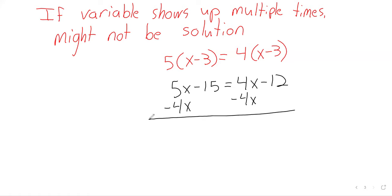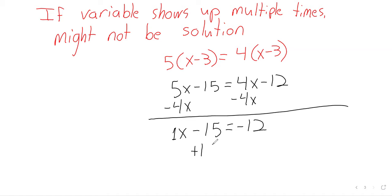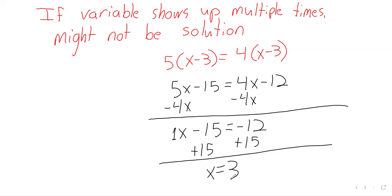Our options are to subtract 5x from both sides or subtract 4x from both sides, and we'll wind up in the same place. I observe that if we subtract 5x we get a negative x, whereas if we subtract 4x we get a positive x. I normally try to keep my x's positive if I can help it. All that remains is to get x by itself on the left, and we add 15 to both sides. There's our answer.